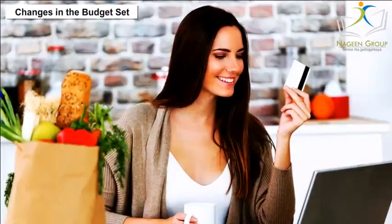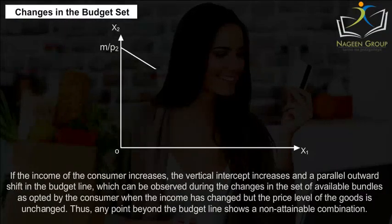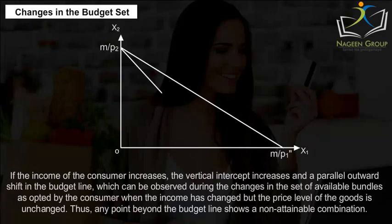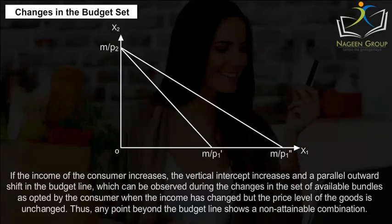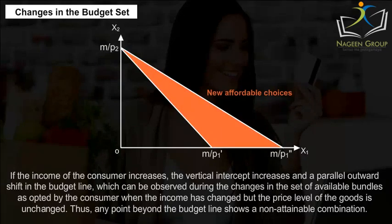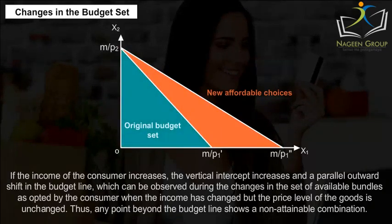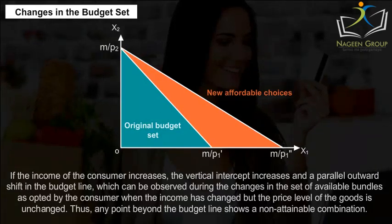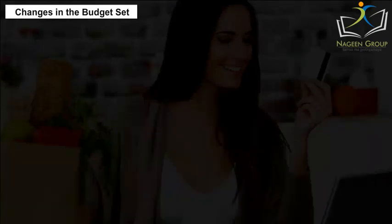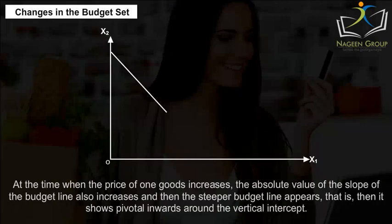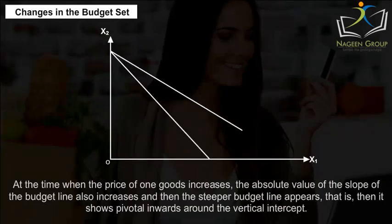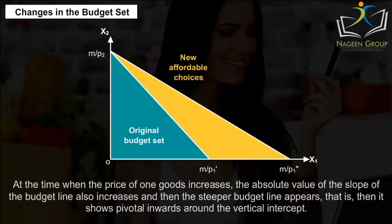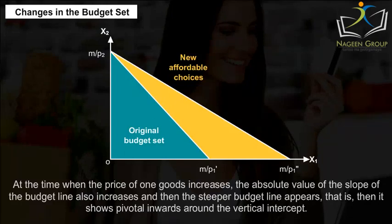Changes in the Budget Set. If the income of the consumer increases, the vertical intercept increases and a parallel outward shift in the budget line can be observed during the changes in the set of available bundles as opted by the consumer when the income has changed, but the price level of the goods is unchanged. Thus, any point beyond the budget line shows a non-attainable combination. At the time when the price of one good increases, the absolute value of the slope of the budget line also increases and the steeper budget line appears — it shows a pivotal inward shift around the vertical intercept.